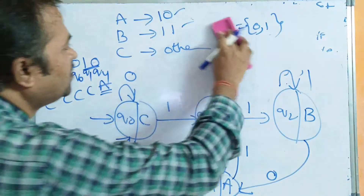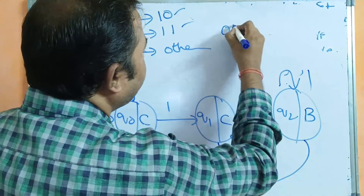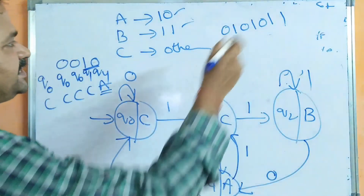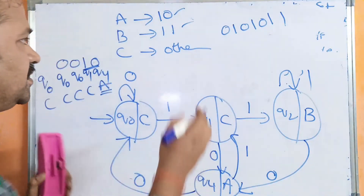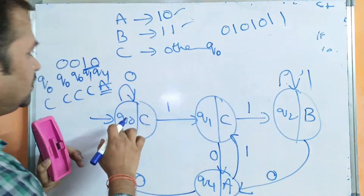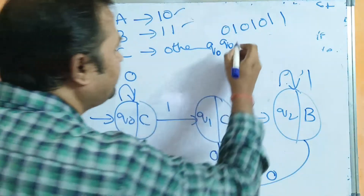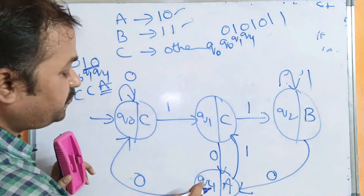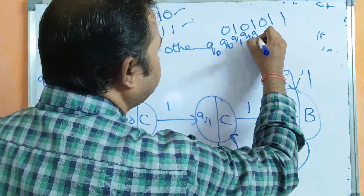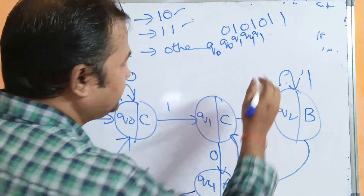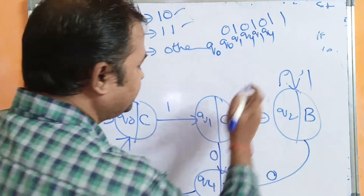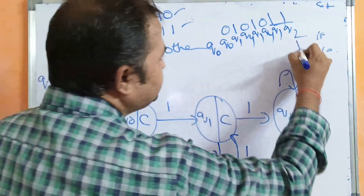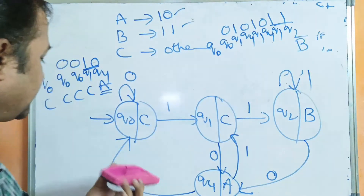Now let's take a string ending with 1,1: 0,1,0,1,0,1,1. We have to produce B as the output. Starting at Q0: Q0 on 0 → Q0, Q0 on 1 → Q1, Q1 on 0 → Q4, Q4 on 1 → Q1, Q1 on 0 → Q4, Q4 on 1 → Q1, Q1 on 1 → Q2. The string ends at Q2, and we get B as the output.